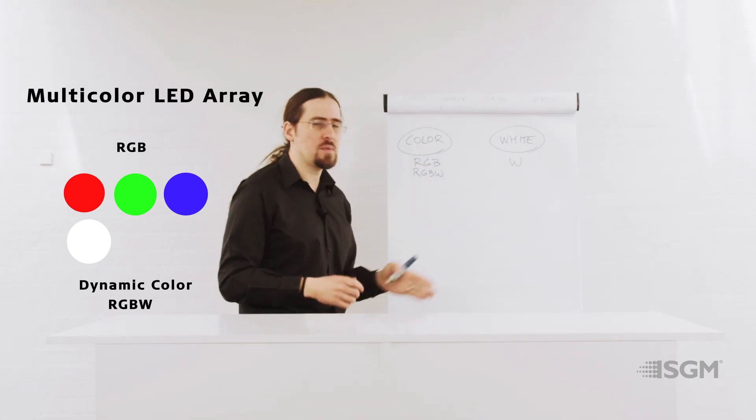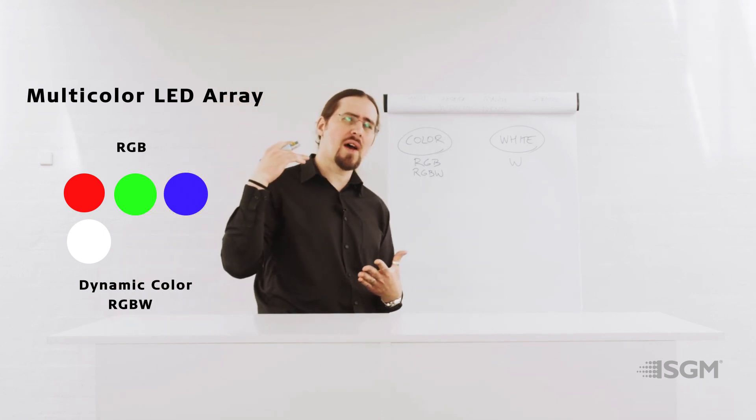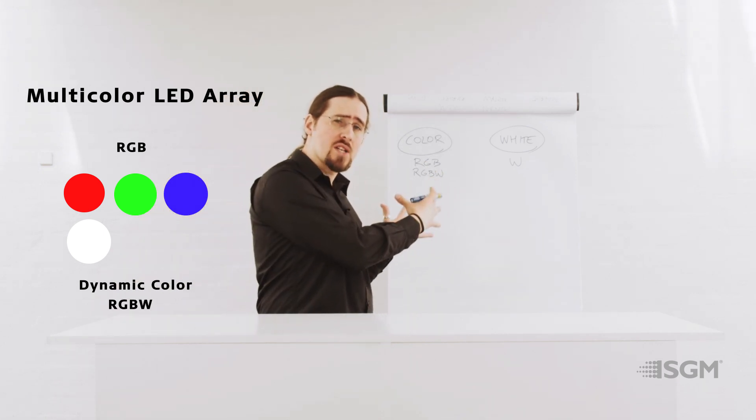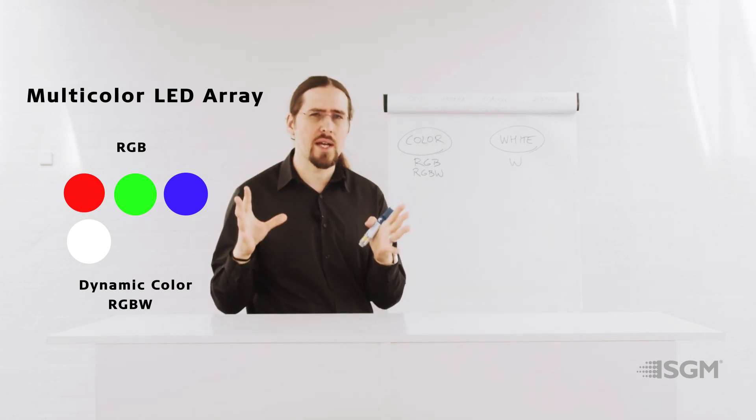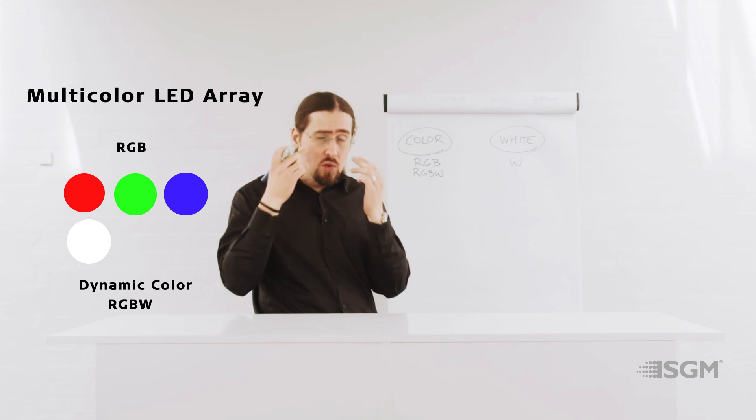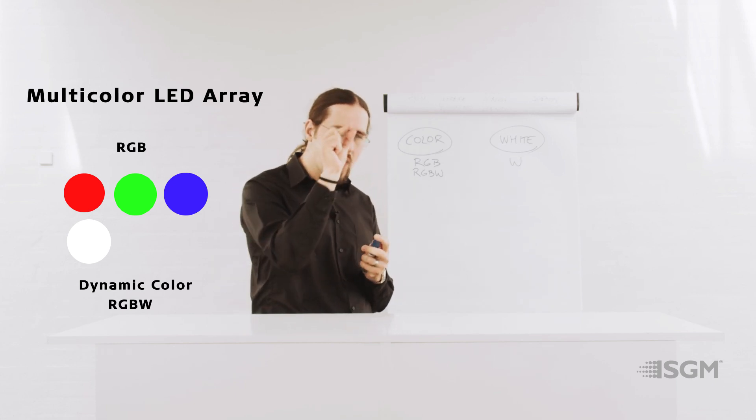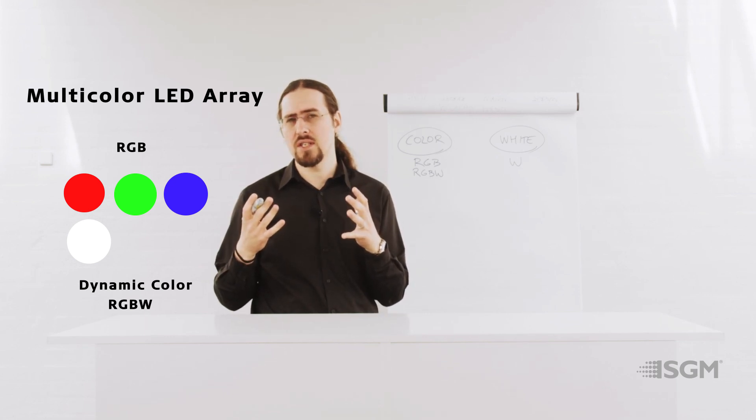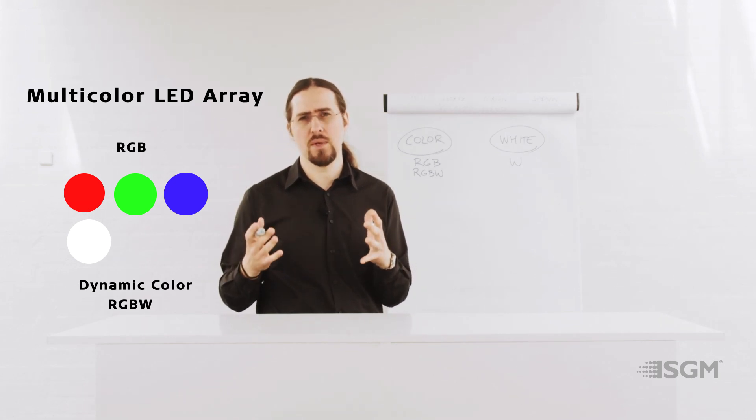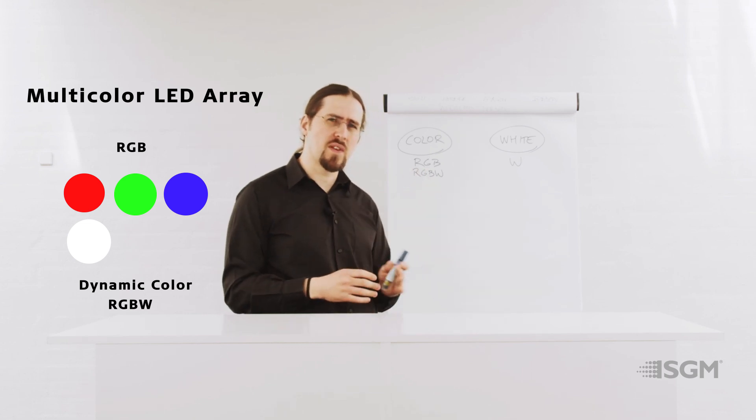When you are using RGB white, normally you want to have the ability, apart from an extra output, you want to have the ability of being able to use a pure white. Something that, to the direct view, is not showing any red and green and blue LEDs, just a very pure white, where you can see only the color temperature that you have specified for that specific LED.